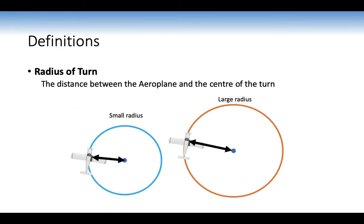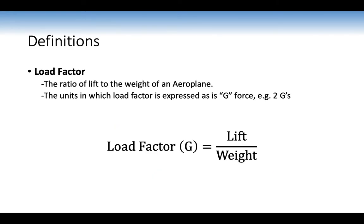Radius of turn: the distance between the aeroplane and the centre of the turn. The centre of the turn is an imaginary point about which the aeroplane turns — the distance between that centre point and the fuselage. Angle of bank and airspeed can affect both rate of turn and radius of turn. Load factor: the ratio of lift to weight of an aeroplane, expressed in G-forces.